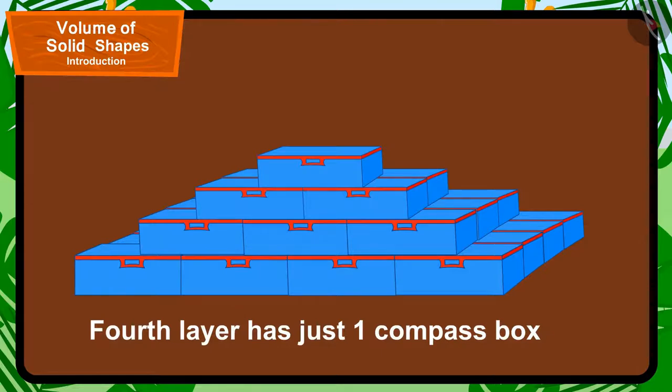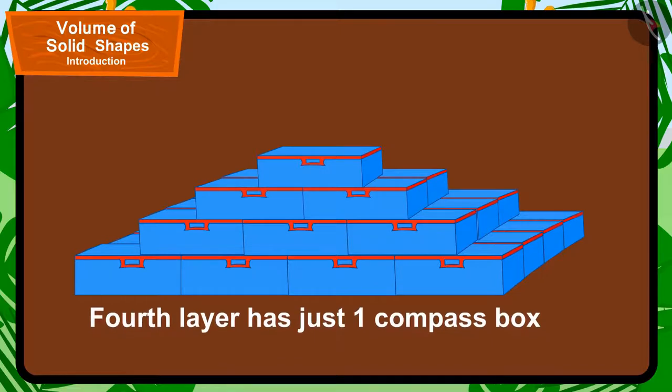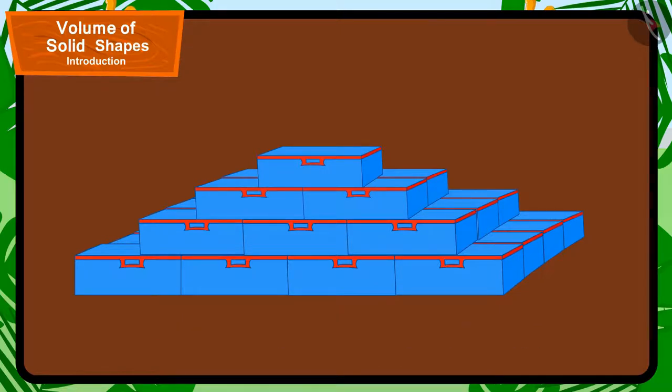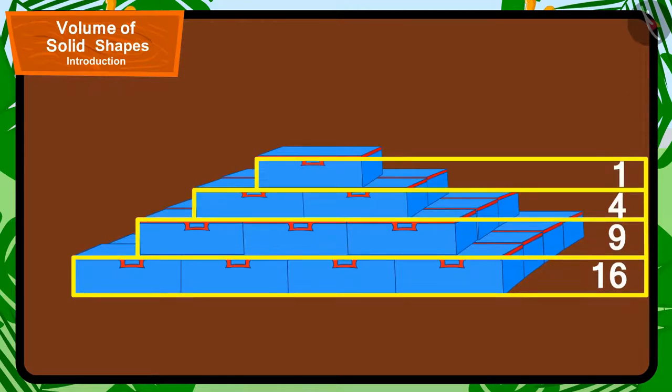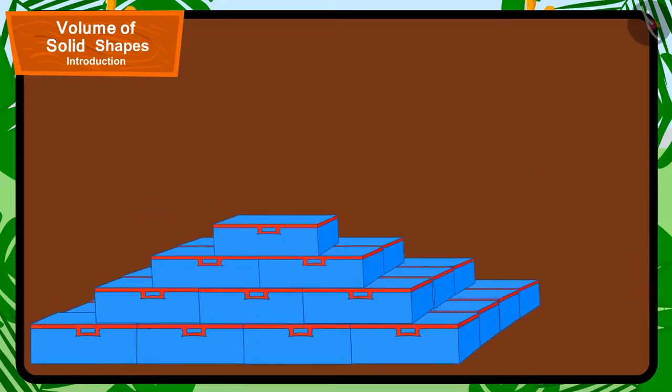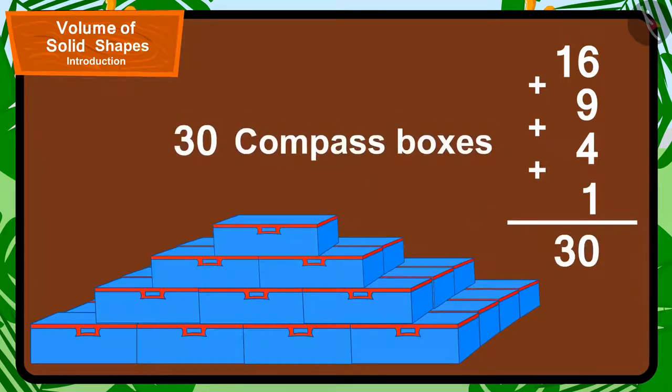Thus, to find the total number of compass boxes in this shape, we need to add the number of compass boxes that are included in all these layers. So, in this shape, by adding 16 plus 9 plus 4 plus 1, we get 30 compass boxes.